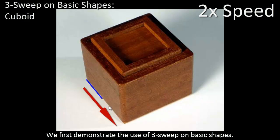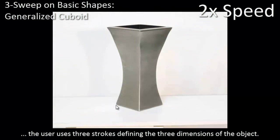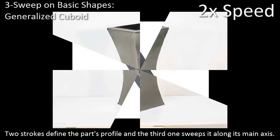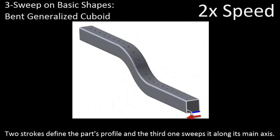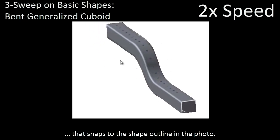We first demonstrate the use of 3-sweep on basic shapes. To extract an object from a given photo, the user uses three strokes defining the three dimensions of the object. Two strokes define the part's profile, and the third one sweeps it along its main axis. This procedure progressively defines a 3D body that snaps to the shape outlined in the photo.